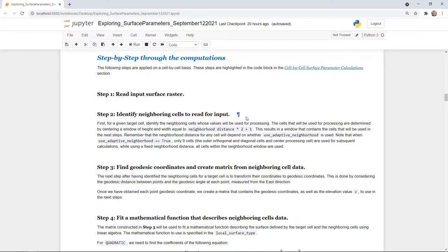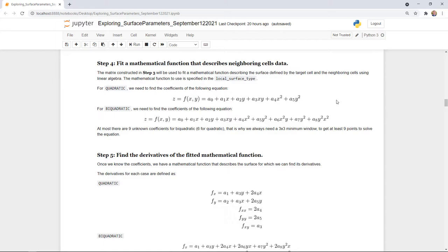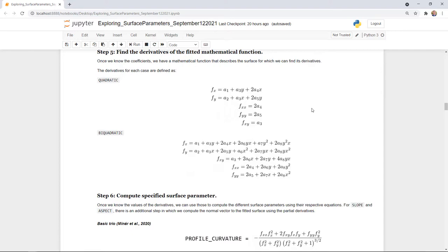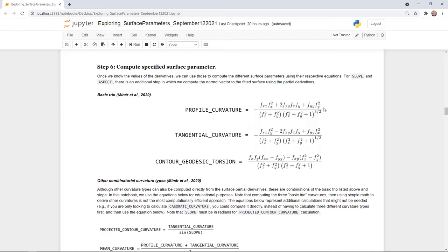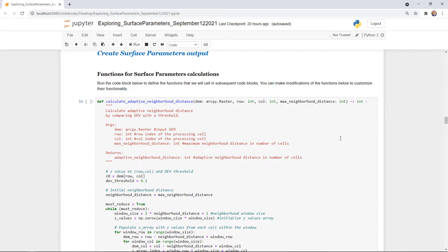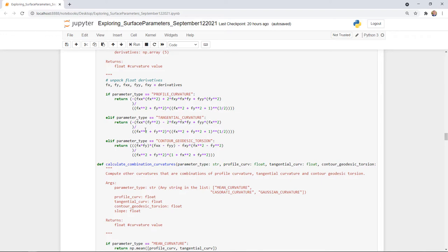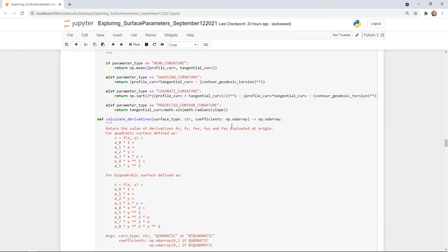The notebook is really laid out fairly simply. There are six steps to it explained here in text and then at the end of the notebook in code. First we read the input surface data, identify the neighboring cells that we want to read for input, do the geodesic calculations and build a matrix, fit a surface to the neighboring cells, compute the derivatives that we need for the surface, and then compute the specified surface parameter or terrain metric of interest. So here's the three basic trio of curvature types with their full formulas that we implement, and then the combinatorial curvatures that we also talked about. Then we have a set of functions that we use inside of the calculations. So these are the worker bits, the modular piece of the code that make it easy for the later code to be so simple. So this is all of the guts of where things are happening.